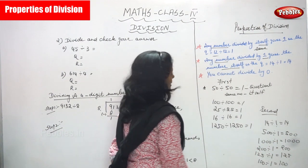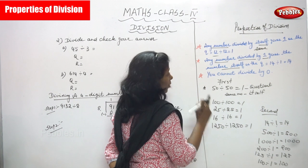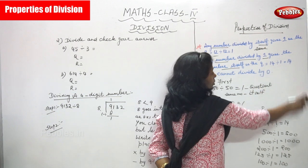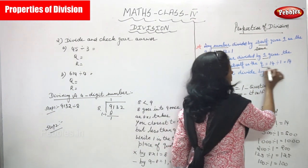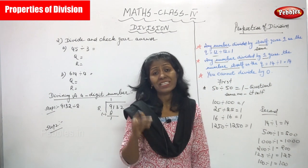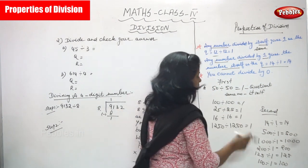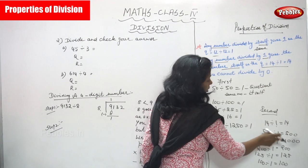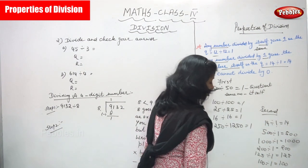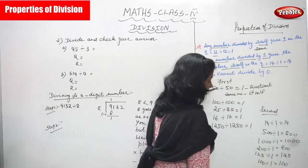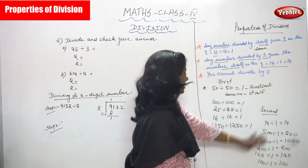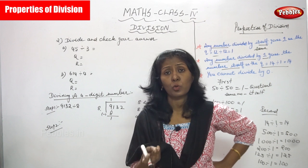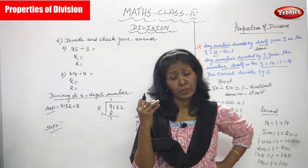These are examples of the second property: any number divided by 1 gives the number itself as the quotient. So 14 divided by 1 equals 14, 500 divided by 1 equals 500, 1000 divided by 1 equals 1000, and 200 divided by 1 equals 200. Also, you cannot divide by 0.